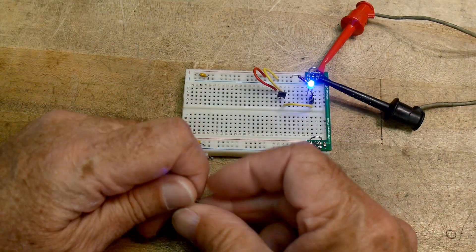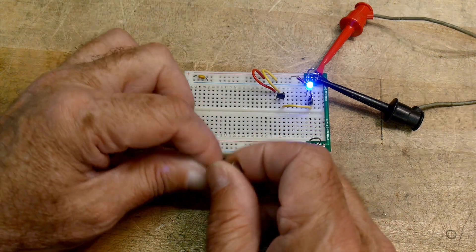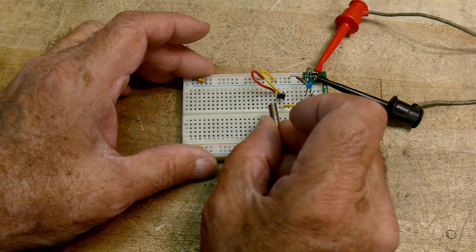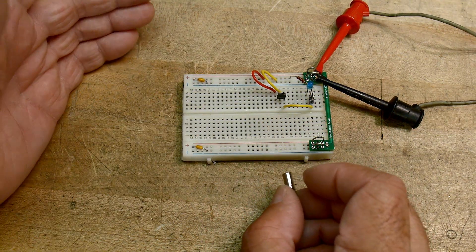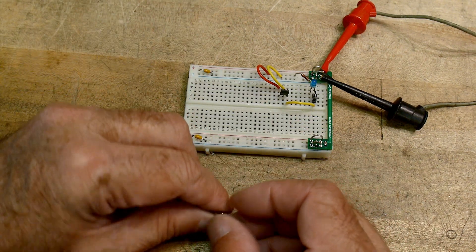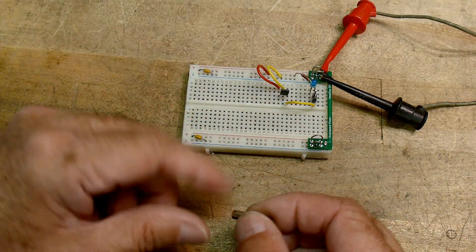So some Hall effect sensors will turn on when you're close to them, and when you move away, they'll turn off. But this one has to have the field sign of the field change.